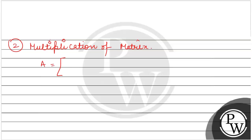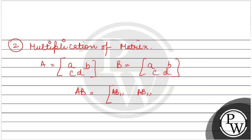Let's suppose matrix A has elements [a, b; c, d] and matrix B has elements [a, b; c, d]. Then the multiplication of A and B is performed by multiplying the first row by the first column, then the first row by the second column, then the second row by the first column, and then the second row by the second column.